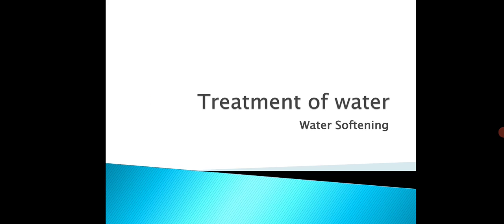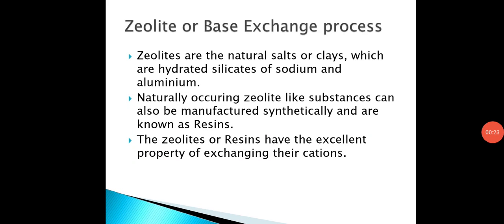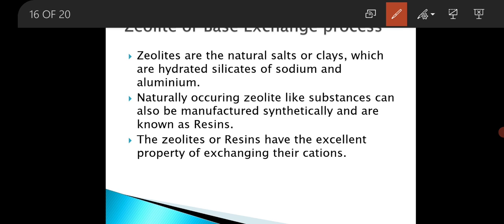This method is also known as the cation exchange process. Zeolites are the natural salts or clays which are hydrated silicates of sodium and aluminum. Naturally occurring zeolite can also be manufactured synthetically, and those are known as resins.